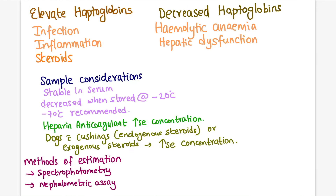Haptoglobin levels are commonly increased during infection, inflammation, and steroid use — both endogenous and exogenous steroids.